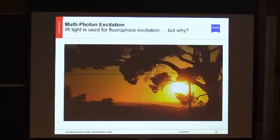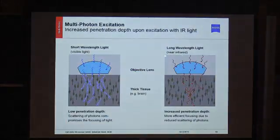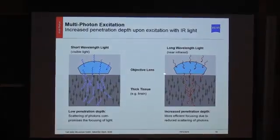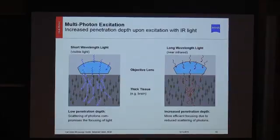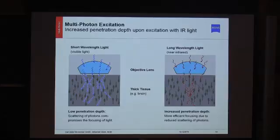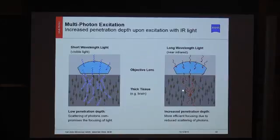Another question: why is infrared light used for excitation in a multiphoton system? Long wavelength infrared light penetrates much deeper into tissue because the scattering frequency of longer wavelength light is lower compared to short wavelength light — so the probability of photons hitting structures and getting scattered is lower. This is why long wavelength light is used: we want it to penetrate relatively deep into our tissues. That's the main reason people use the two-photon microscope system.